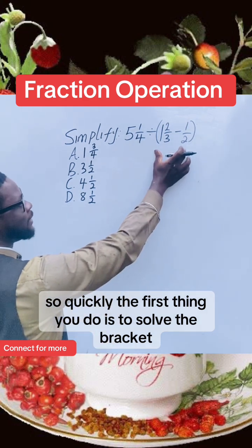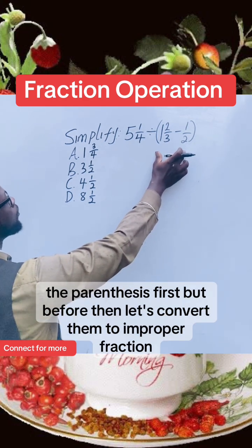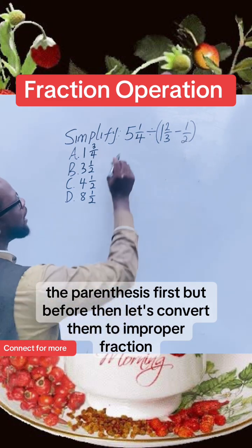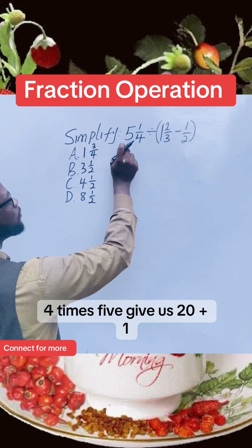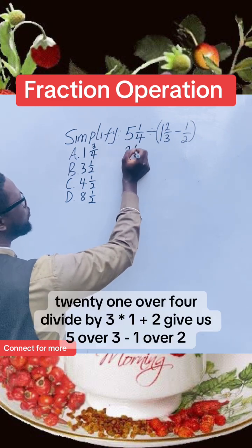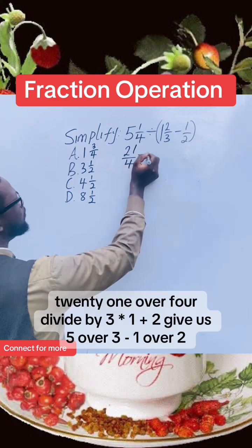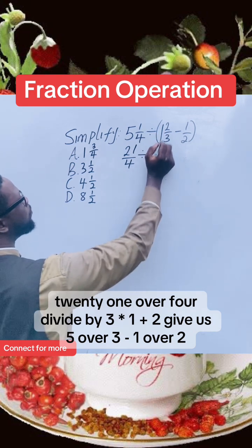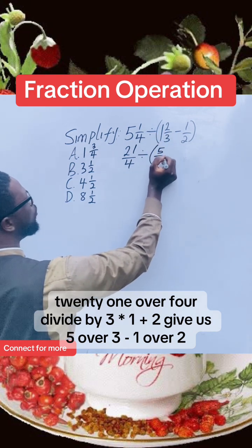But before then, let's convert them to improper fractions. Four times five gives us twenty, plus one, 21/4 divided by three times one plus two gives us 5/3 minus 1/2.